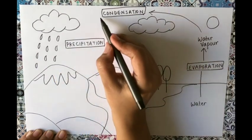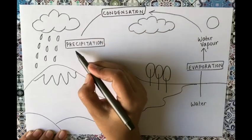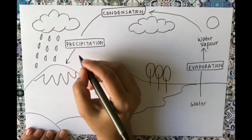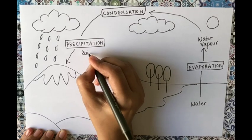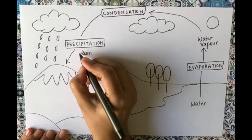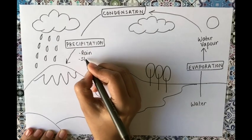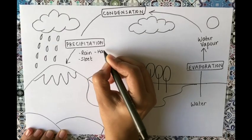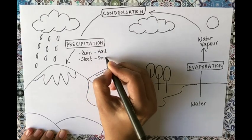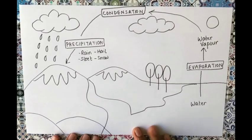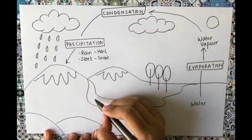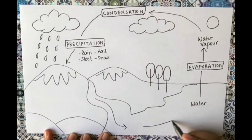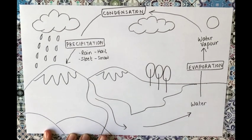Precipitation brings the collected water back from the atmosphere to the surface of earth. Interestingly, precipitation is not only in the form of rain — it can also be sleet, hail, or snow. It all depends on the temperature in the atmosphere at which condensation occurs, and how cool the atmosphere is at a particular place.